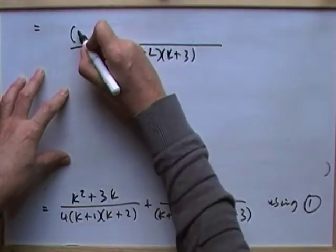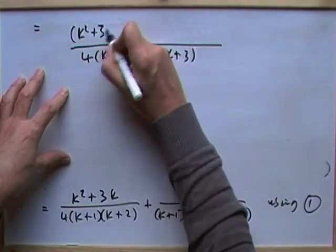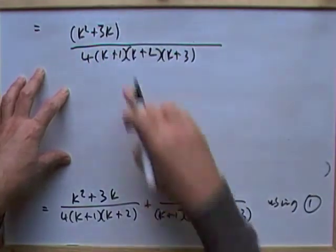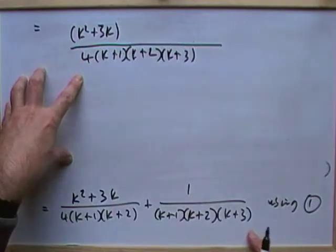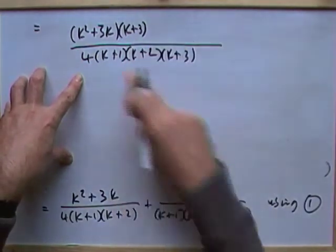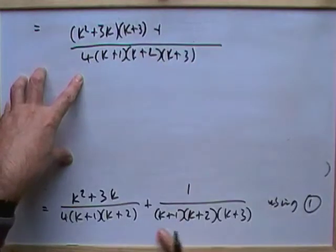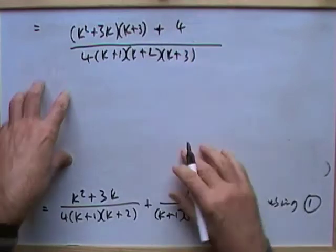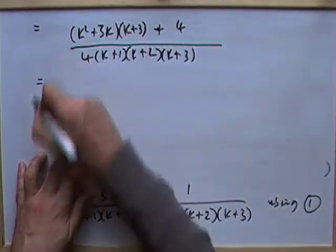Then this numerator, k squared plus 3k, will need to get multiplied by another k plus 3 to give it the same denominator as this one. This one's got most of it apart from the 4, so the top of this only needs to get multiplied by 4. Next, there's no common factors here, so I've got no option but just to multiply that lot out.